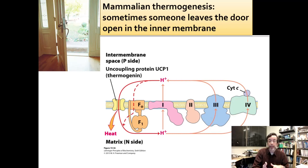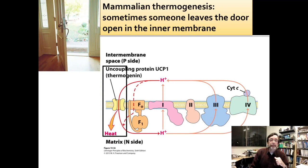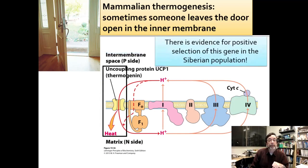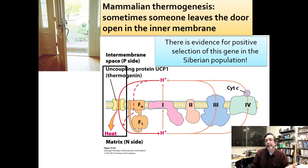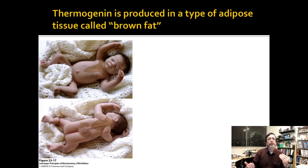By opening up a proton pore, the protons will flow naturally down and you'll dissipate the gradient, and you'll get heat as a result. You don't want to do this under normal conditions, but there are some conditions under which you want to do this. For example, if you live in Siberia you might gain a survival advantage by being able to generate your own heat under dire circumstances, and there is positive selection of this gene in the Siberian population. But the place where we know it works in everyone is when you are a newborn — you aren't good at regulating your body heat yet and you don't even have fat reserves yet.